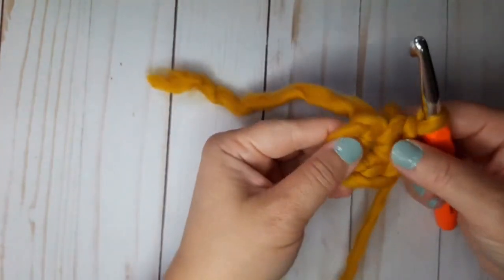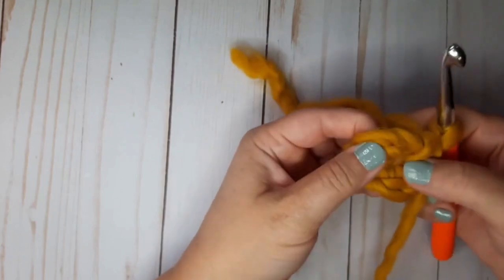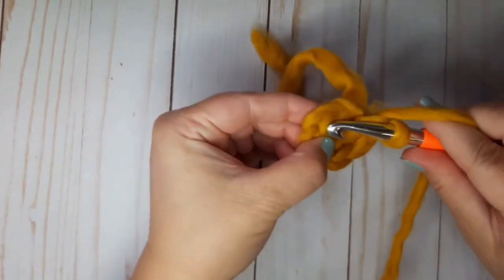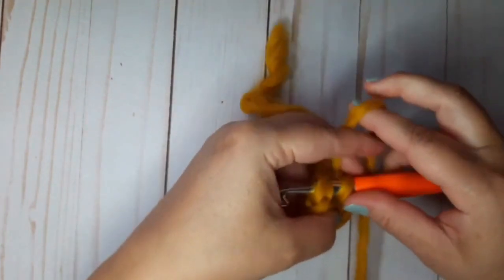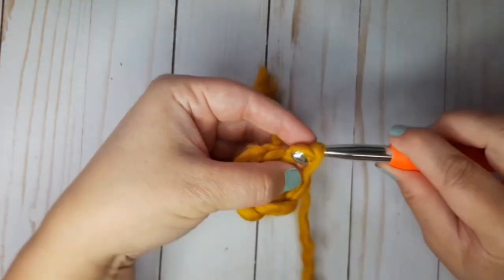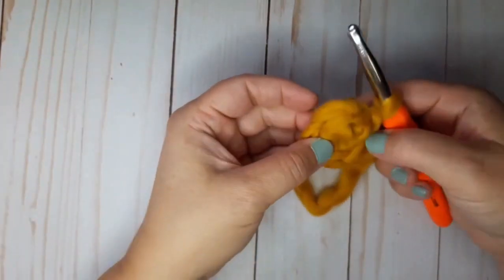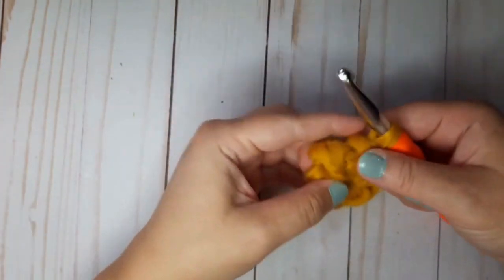There's still a little bit of a hole here. I'm just gonna go back into the first stitch and either make a slip stitch or a single crochet to get rid of this extra hole.